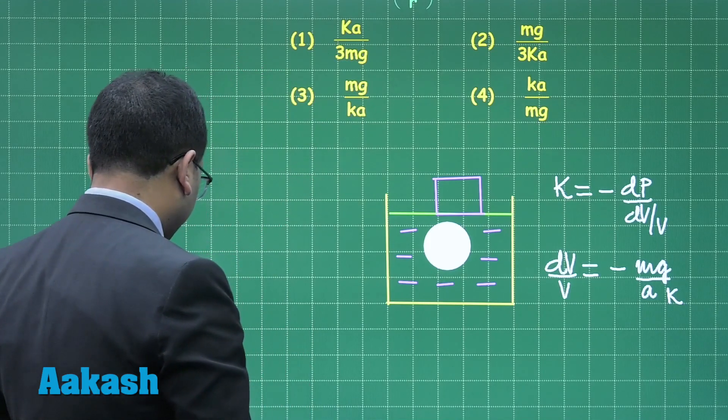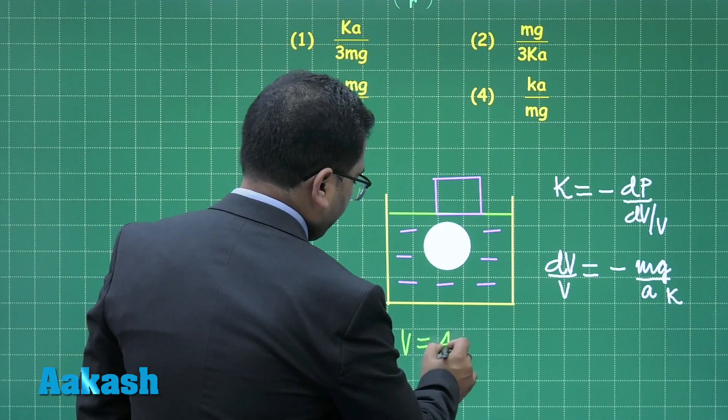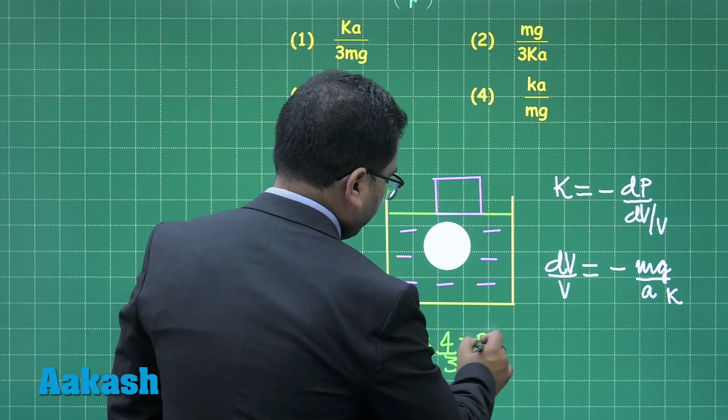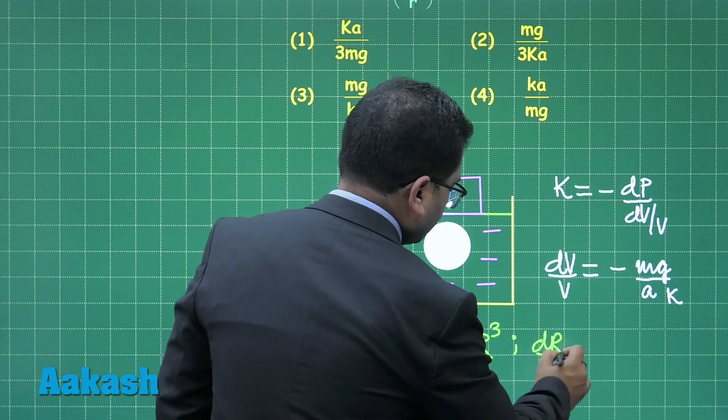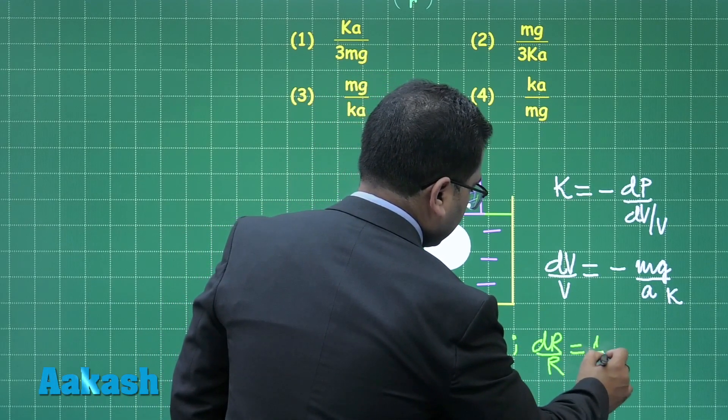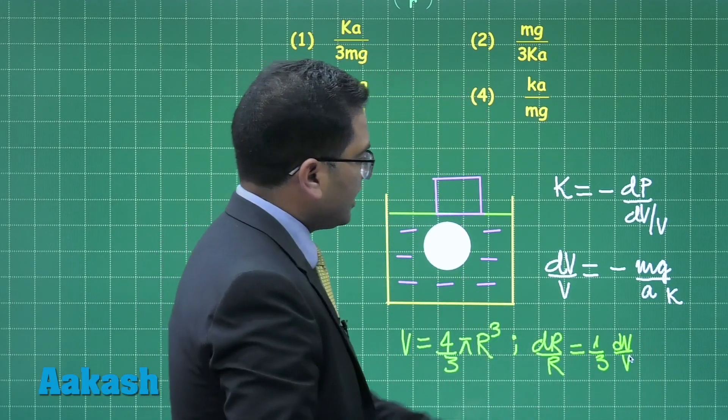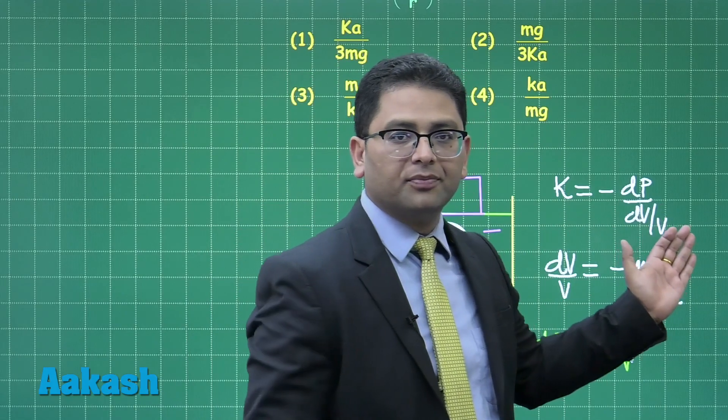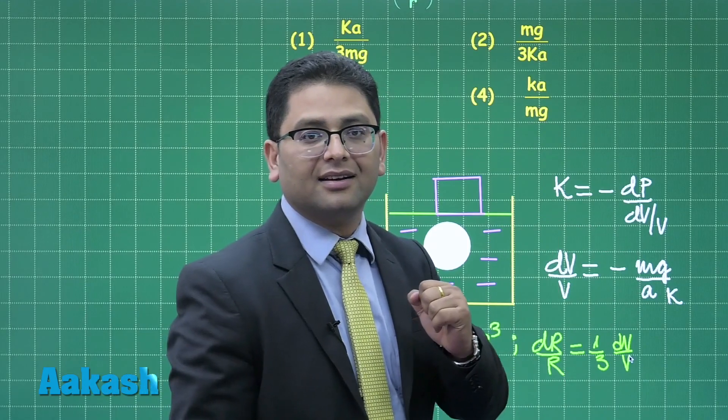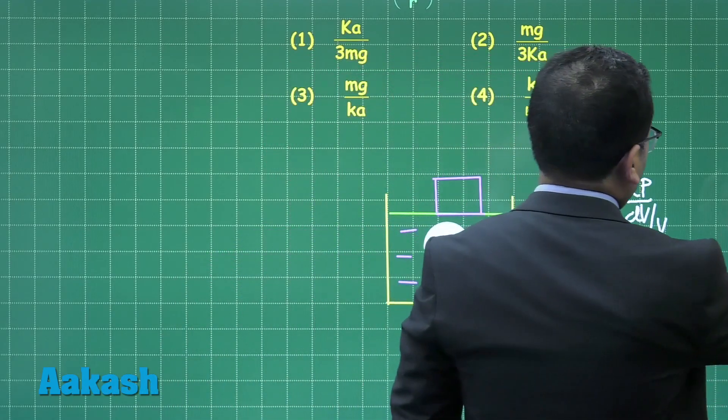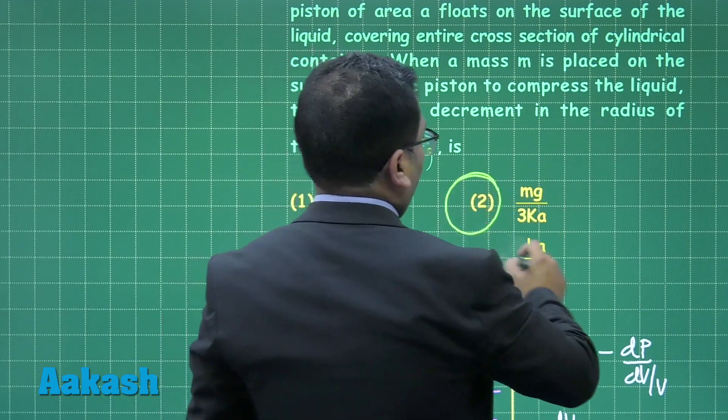But the question has demanded the fractional change in radius. We know V = 4/3πr³. This is so simple now that the fractional change in radius is one third the fractional change in volume. Here is the fractional change in volume, all I need to do is divide by 3. So mg/3AK is going to be the fractional change in radius.